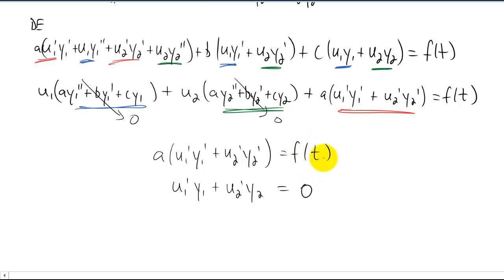F of t is given to us in the differential equation, and a is a constant in front of our first term in our differential equation. So the only thing we don't know in both of these equations is u1 prime and u2 prime. So what we're left with is two equations and two unknowns. We can solve this for u1 prime and u2 prime.